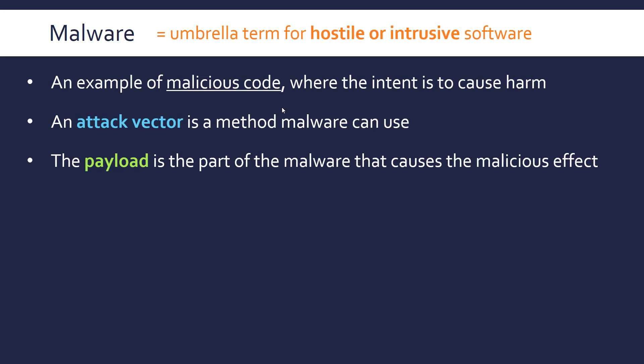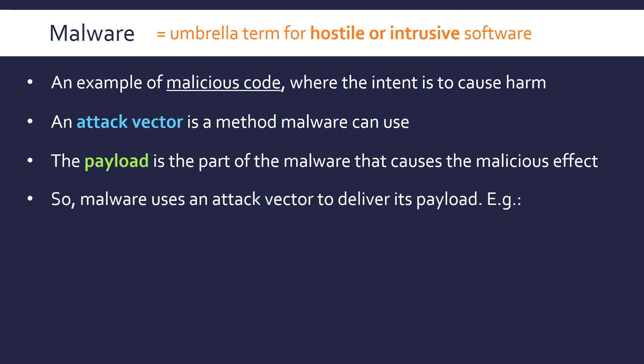The attack vector will vary from attack to attack depending on the type of malware. The payload is the part of malware that actually causes the malicious effect. Not all parts of the malware immediately cause an effect — part of it might be to spread or to gain access using an attack vector. The payload is the damaging part that causes the hostility or intrusion. To link this together: malware is the program and it uses an attack vector to deliver the payload.